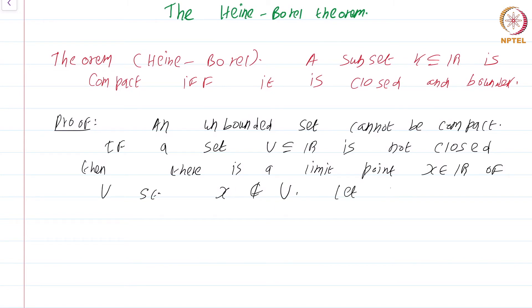Let x_n in U be such that x_n converges to x. Such a sequence must exist simply because x is a limit point of U. But every subsequence of x_n must converge to x.